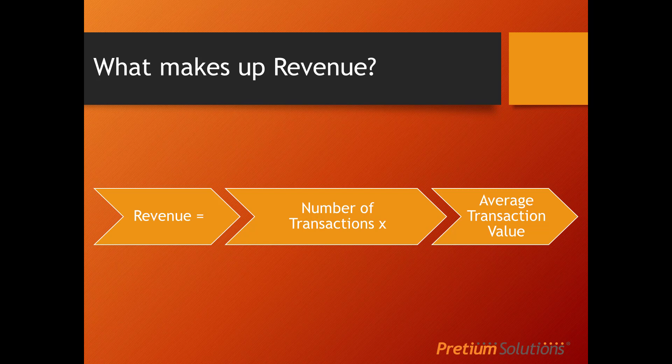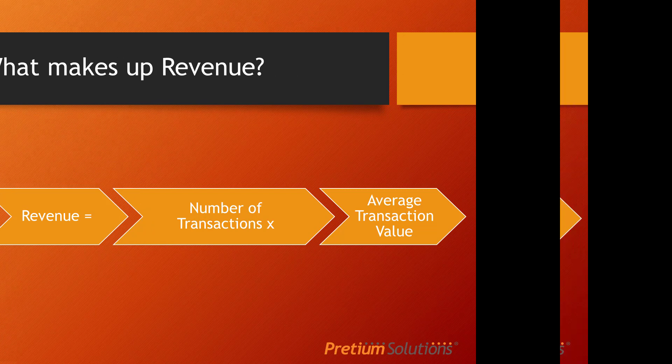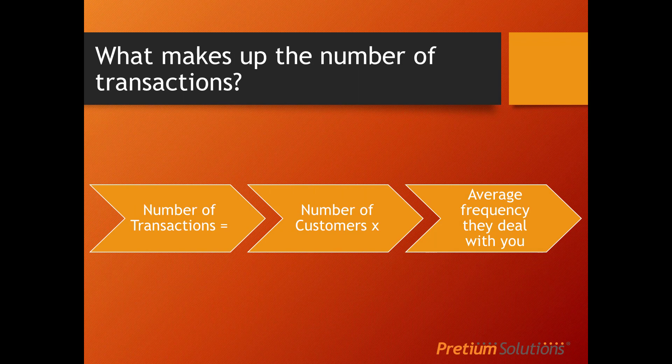The number of transactions can be increased by selling more — either by having more customers, or by increasing the frequency that someone deals with us. We might have a customer we sell to once a year; we can increase our number of sales by getting each customer to buy from us twice a year instead of once. So the more our customers transact with us, the higher the number of transactions, and that feeds back into revenue.